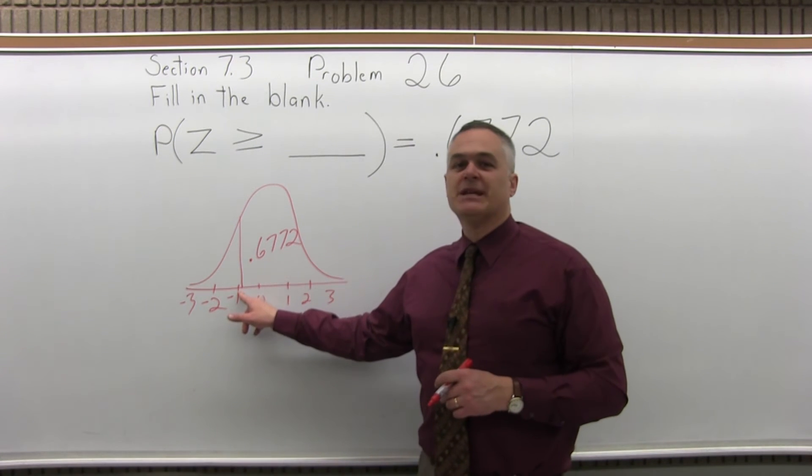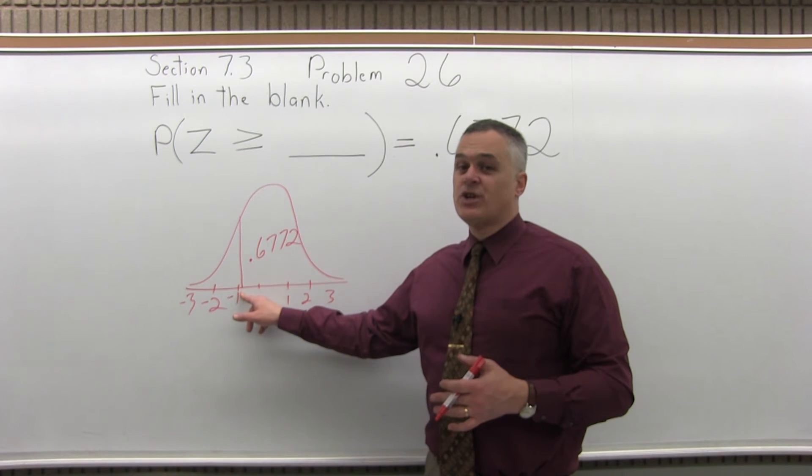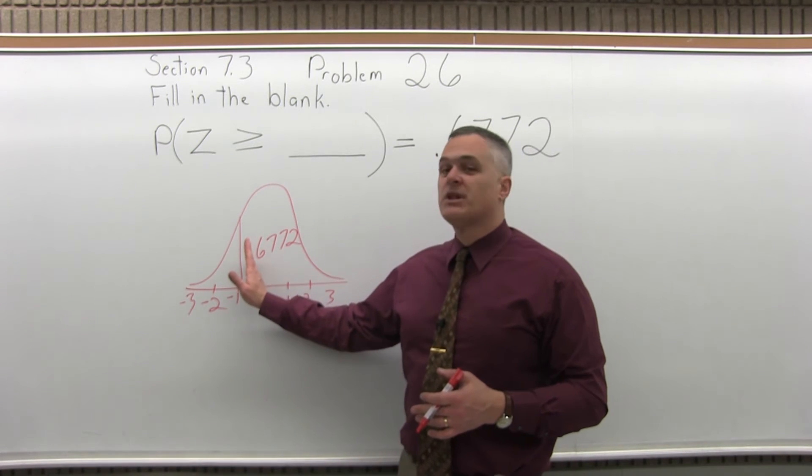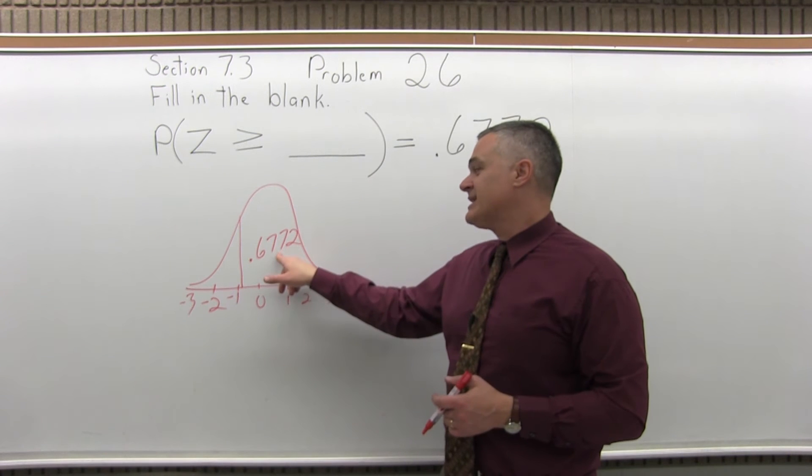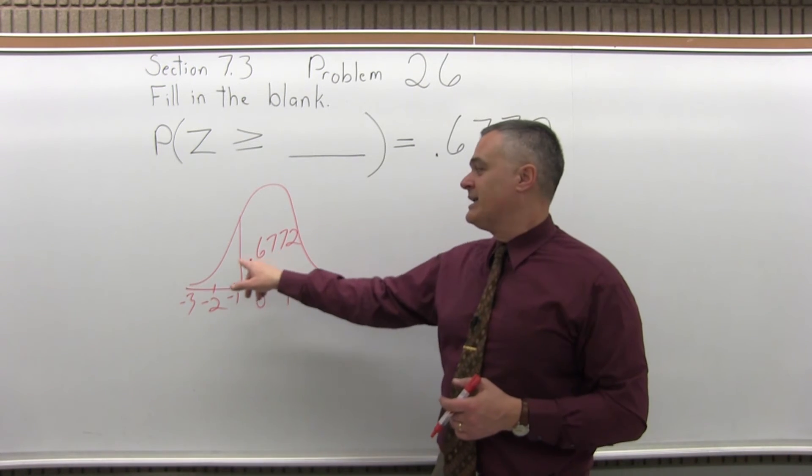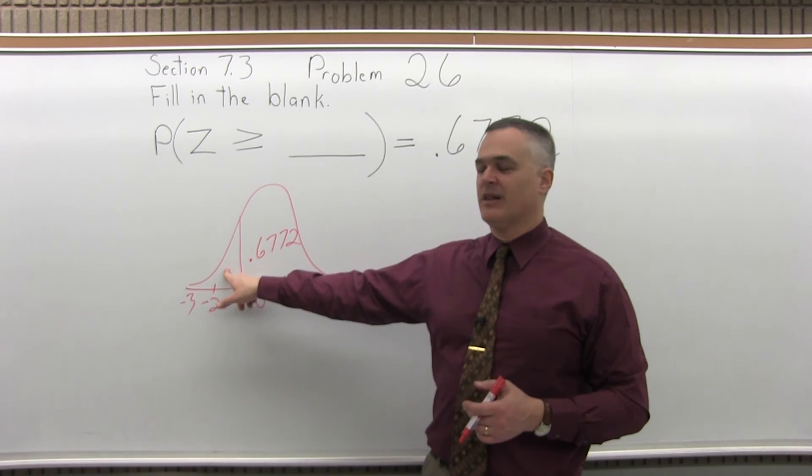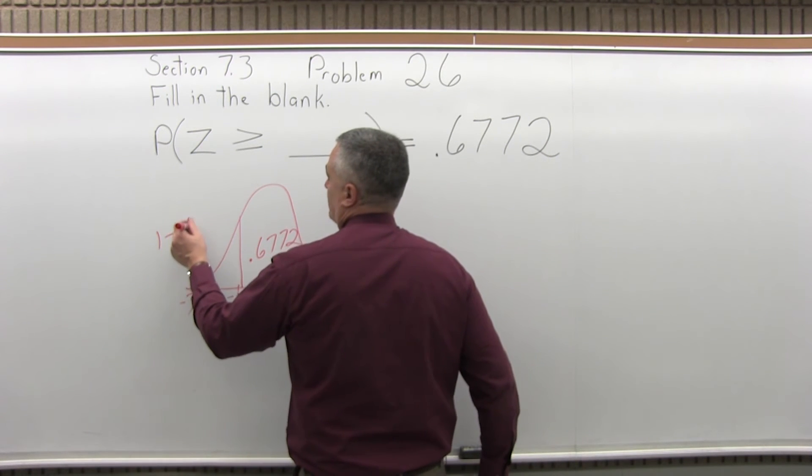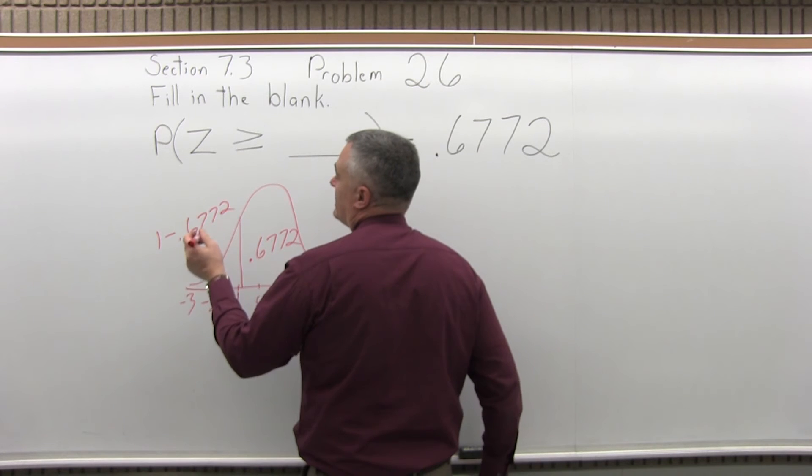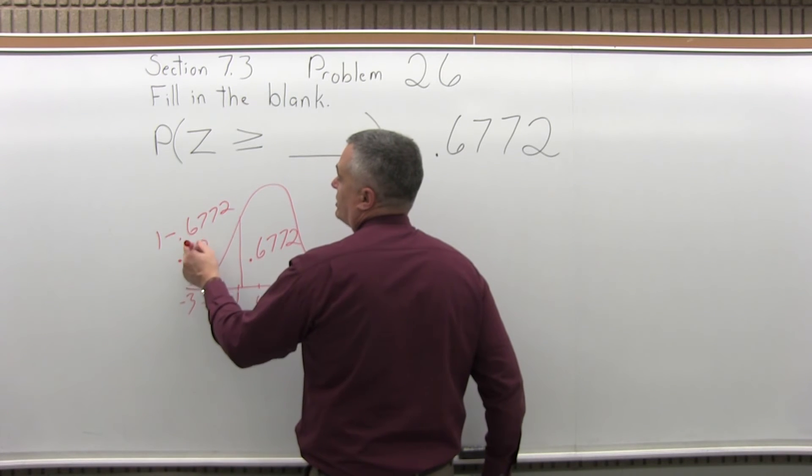I want to know what I have to look up to get that. The way the chart works, it tells me the probability of what's to the left of what I looked up. So this 0.6772 isn't really helping me. I need to know what's on the other side, the left side. I can figure that out. Do 1 minus the 0.6772 and that's going to give me 0.3228.